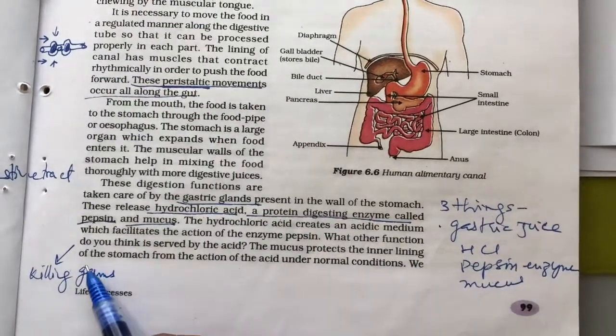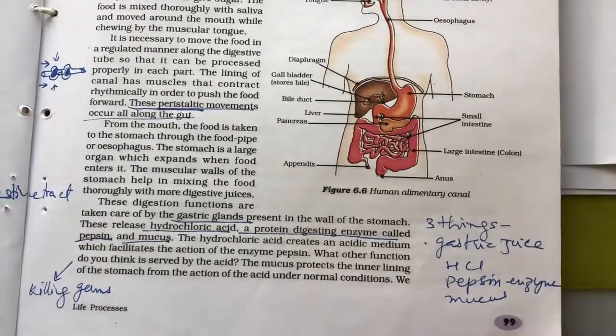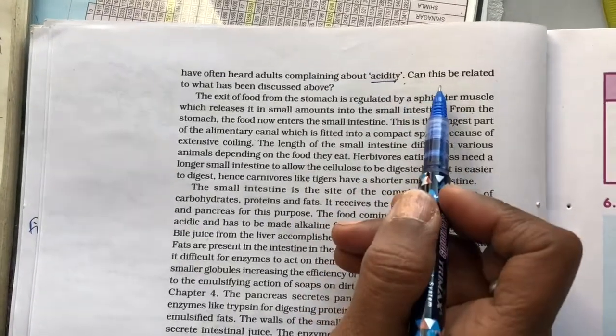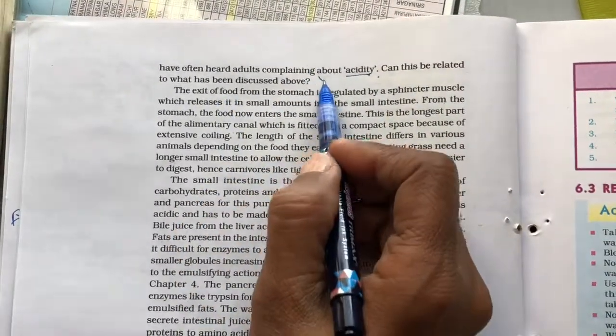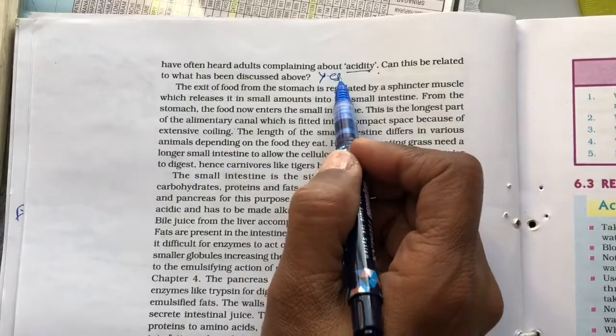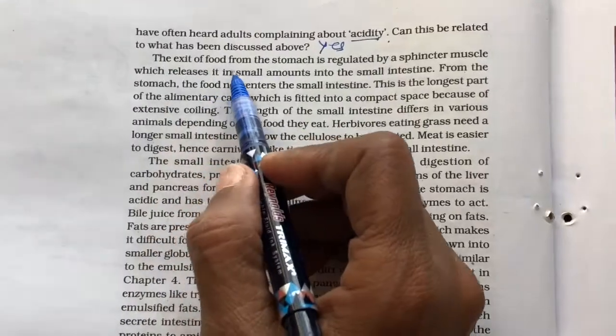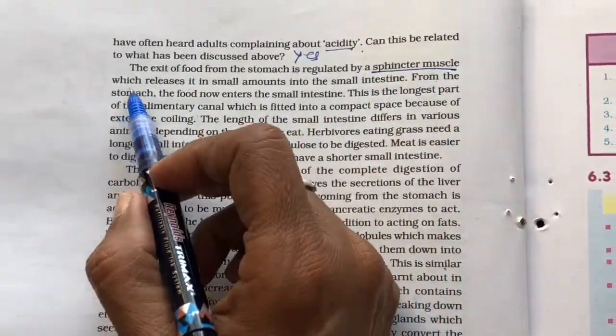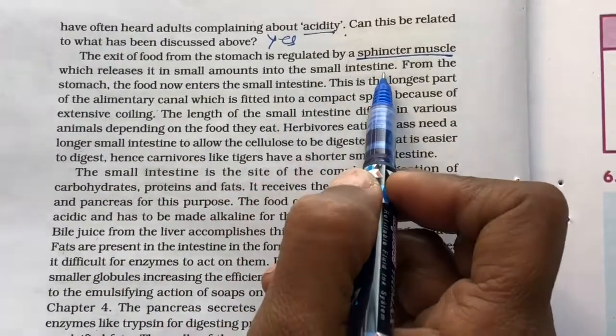The mucus protects the inner lining of the stomach from the action of the acid under normal conditions. We have often heard adults complaining about acidity. Can this be related to what we have been discussing? Yes. The acid is more secreted in the stomach. The exit of food from the stomach is regulated by a sphincter muscle which releases it in small amounts into the small intestine.